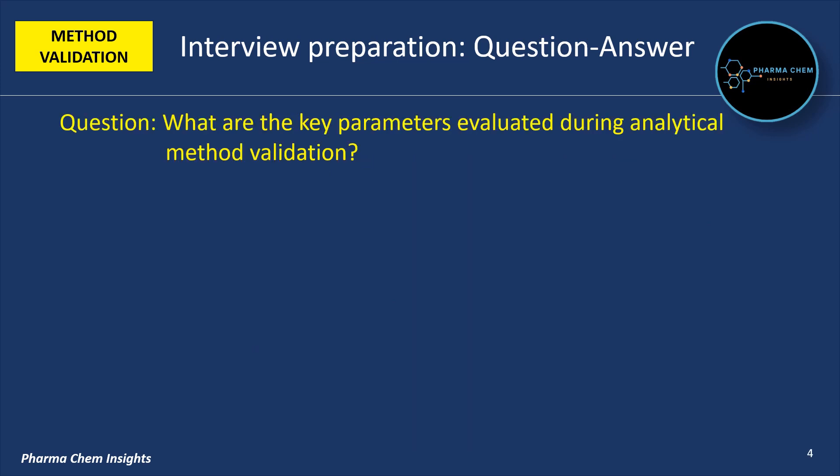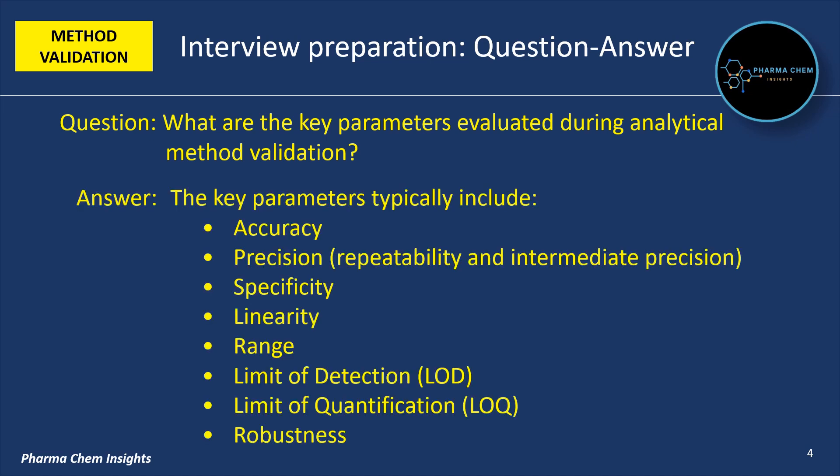Next question: what are the key parameters evaluated during analytical method validation? The key parameters typically include accuracy, precision (i.e. repeatability and intermediate), specificity, linearity, range, limit of detection (LOD), limit of quantification (LOQ) and robustness.